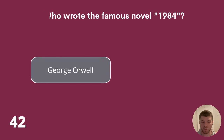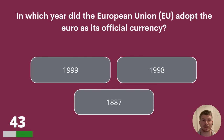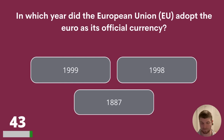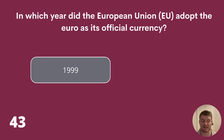Question 43. In which year did the European Union adopt the Euro as its official currency? 1999, 1998 or 1887? The answer is 1999.